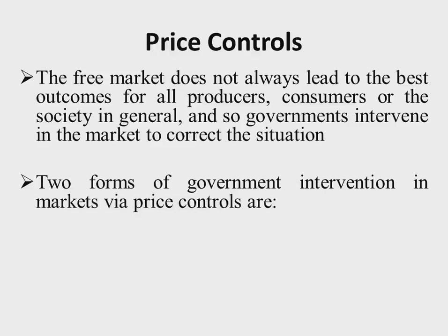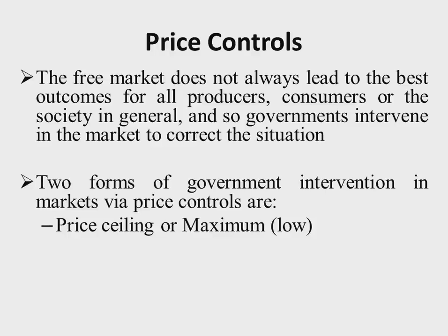Government intervention in the market through price controls takes two forms: the price ceiling, which is the maximum price that can be charged, and the price floor, which is the minimum. Think of a house — the ceiling above your head is the maximum, and the floor where you step is the minimum price that firms can charge.